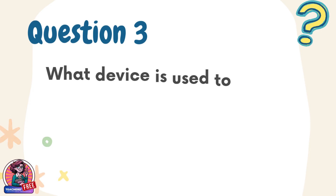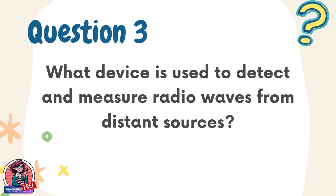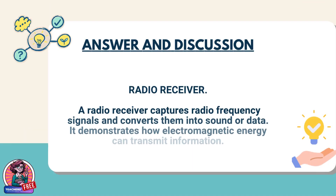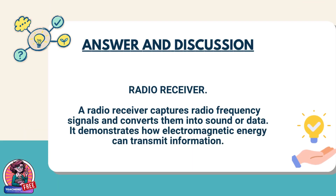Question 3. What device is used to detect and measure radio waves from distant sources? Answer: radio receiver. A radio receiver captures radio frequency signals and converts them into sound or data. It demonstrates how electromagnetic energy can transmit information.